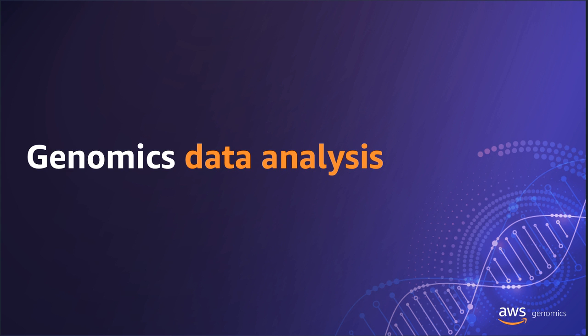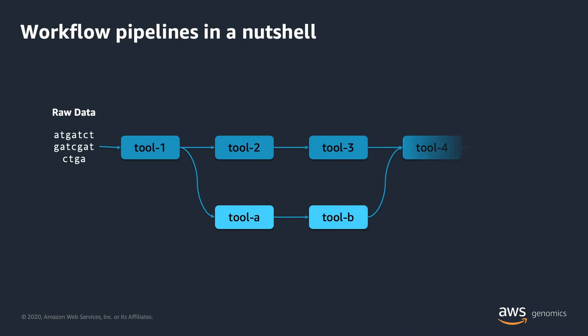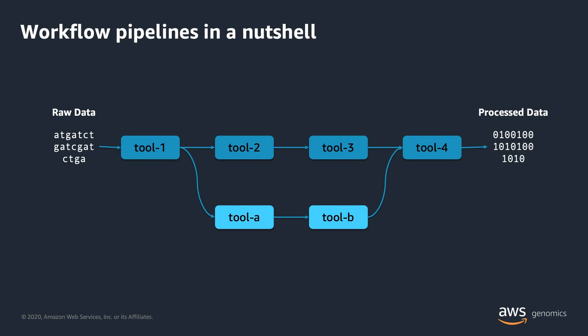Let's talk about how using the cloud applies to genomics data analysis, specifically workflow pipelines. When we talk about genomics workflow pipelines, they typically look like this — you start with your raw sequencing data, your A's, T's, C's, and G's, and you have a sequence of tools that you need to use to process them into a form that you can interrogate and use for scientific or clinical action.